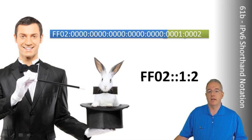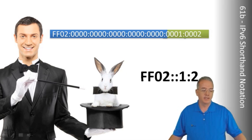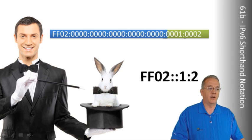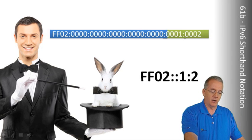We can use a shorthand notation. And the idea behind this is we're going to say, all right, we have a lot of duplicate zeros.